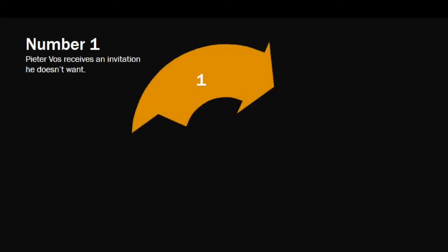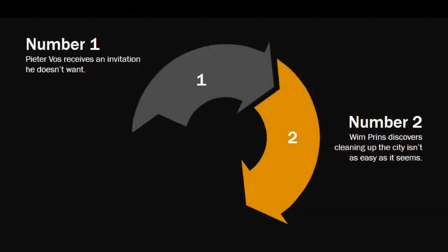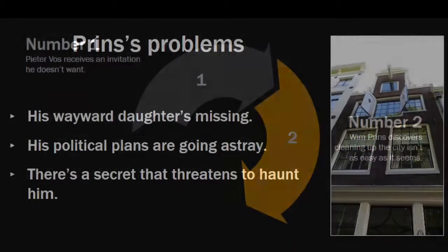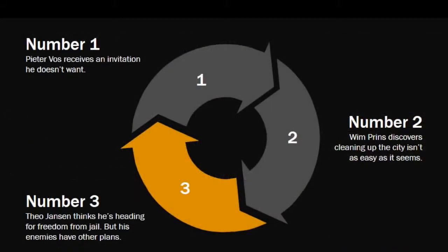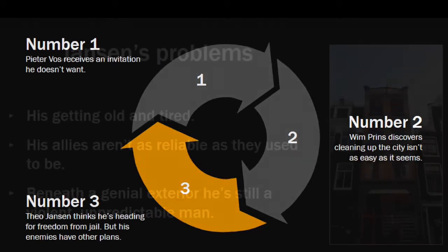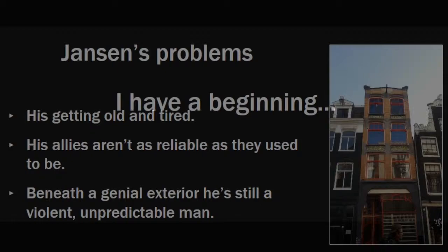We've now got some principal characters. How about a story? Narratives begin with problems, questions that need answering. Peter Voss has been summoned back to the police to investigate the disappearance of Prins's daughter, but he doesn't think he's up to the job. Prins himself is about to discover it's really not that easy to turn back the clock — his daughter's missing, his political allies are proving flaky, and perhaps he has feet of clay. As for Theo Janssen, he thinks he's headed for freedom, but Amsterdam's changed while he's been inside, and not for the better. A world, characters, questions that need answers, problems that require solving. Time I got writing.